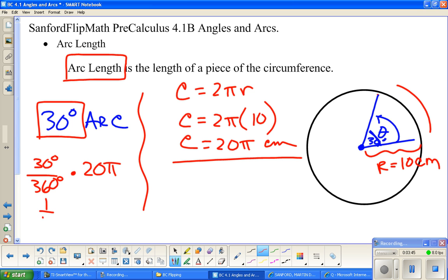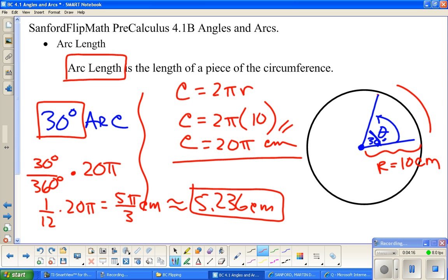This is 1/12th times 20π. So this is going to be 20 over 12, which reduces to 5π over 3 centimeters. If we wanted an approximation, 5π over 3 is 5.236 centimeters. If we went all the way around, that is 62.83 centimeters. But we're only going 1/12th of that here.